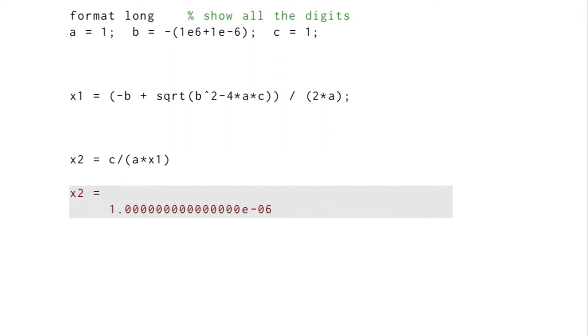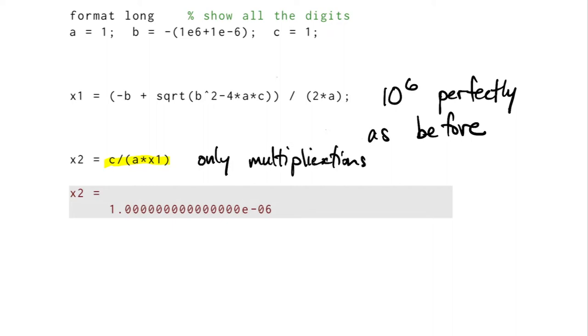With a small change, we can fix the algorithm. We can use the same method as before to get the first root, which was perfect, and then by using an identity from the quadratic formula, we can find the second root using only multiplication and division. They don't suffer from sensitivity, and so this answer turns out to be perfect as well.